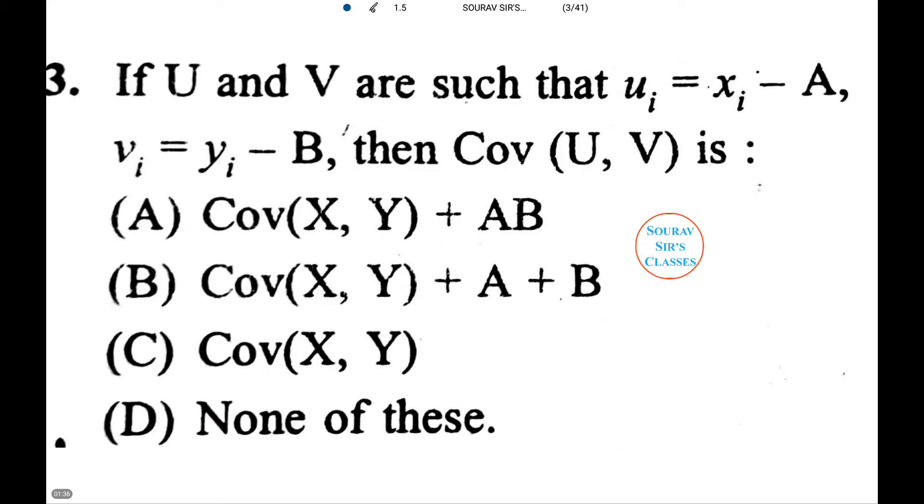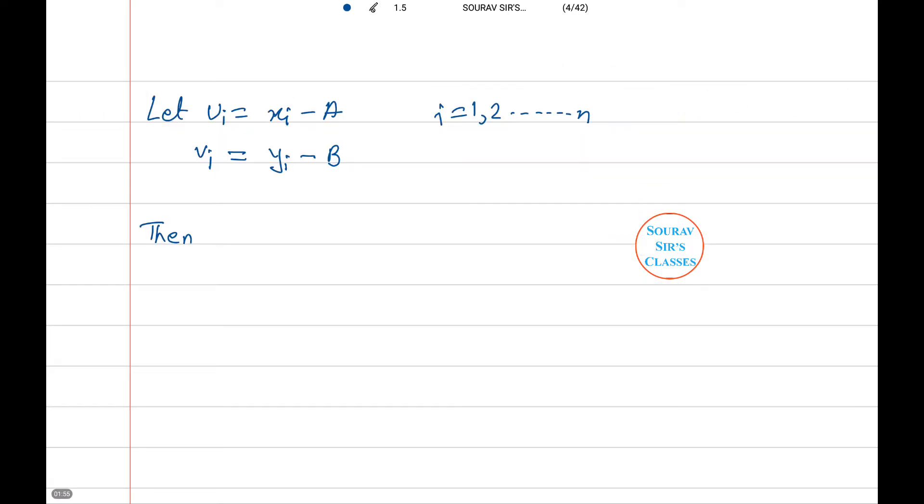Now the next question is kind of a critical one. If capital U and capital V are such that ui equals xi minus A and vi equals yi minus B, then covariance U comma V is. Let's see how to do this.